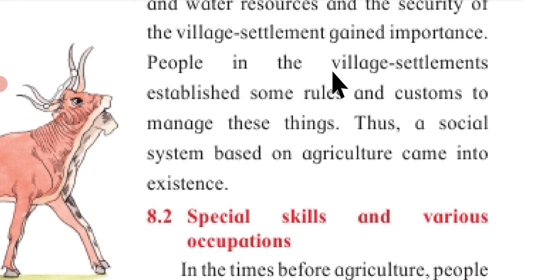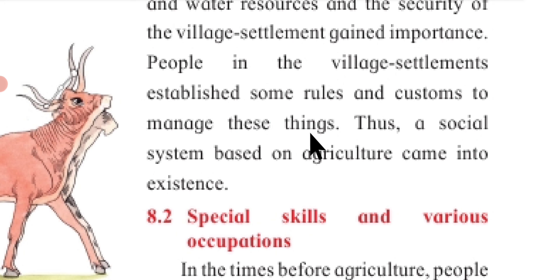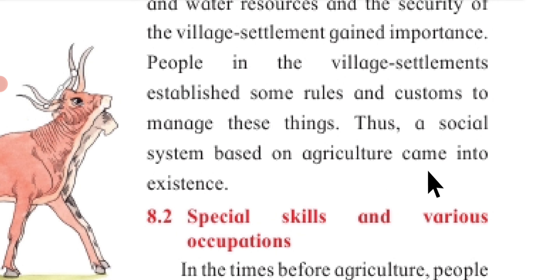People in the village settlements established some rules and customs to manage these things. Thus, a social system based on agriculture came into existence.